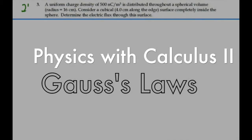Here's problem 24.3. A uniform charge density of 500 nanocoulombs per cubic meter is distributed through a spherical volume of radius 16 centimeters. Consider a cube 4 centimeters along an edge, with its surface completely inside the sphere. Determine the electric flux through this surface.